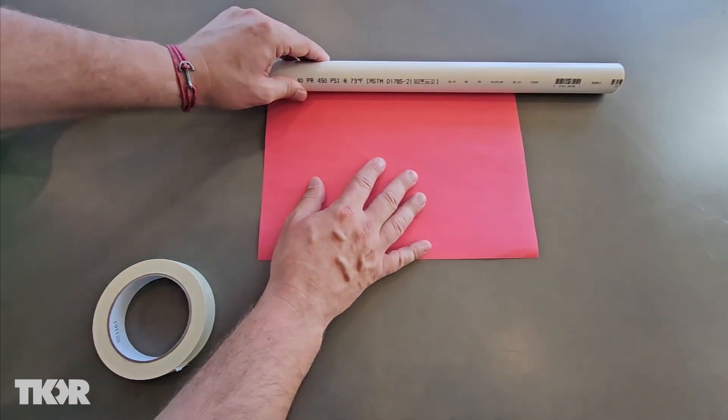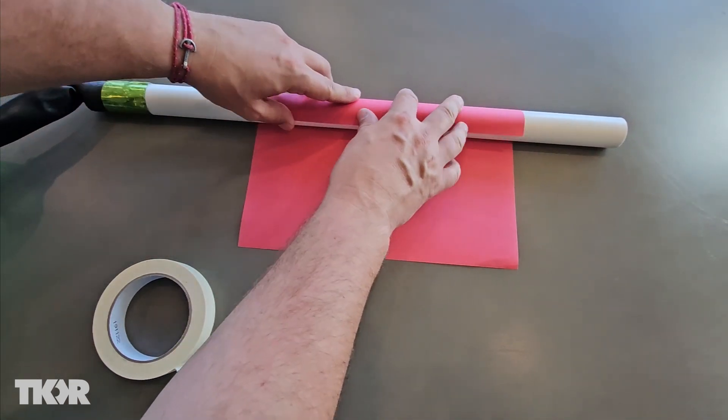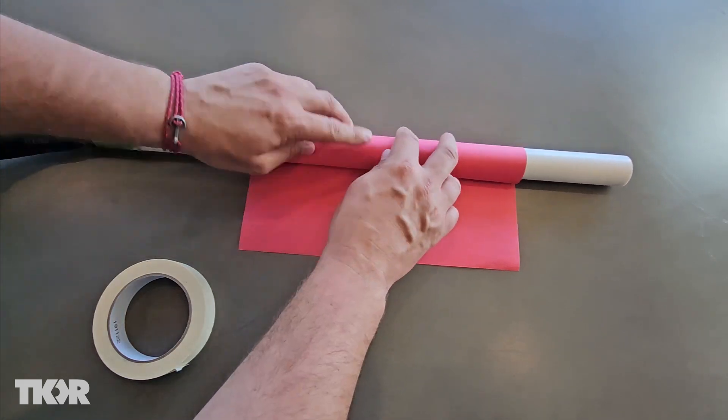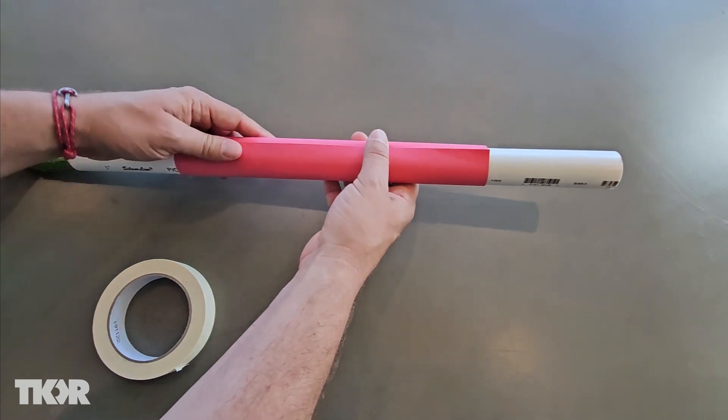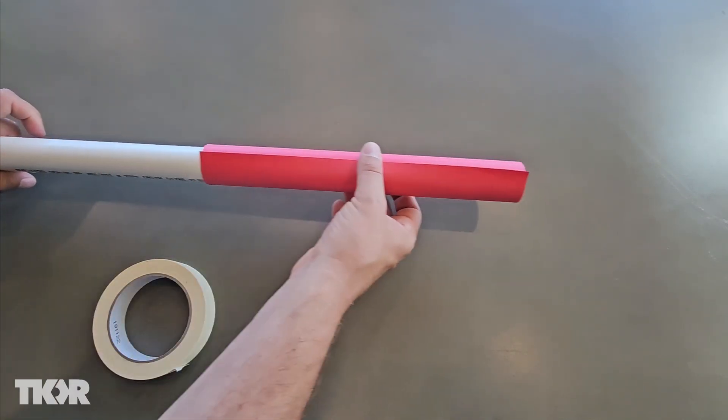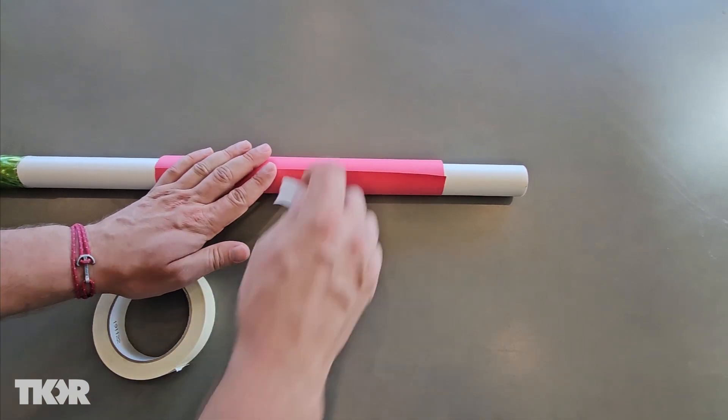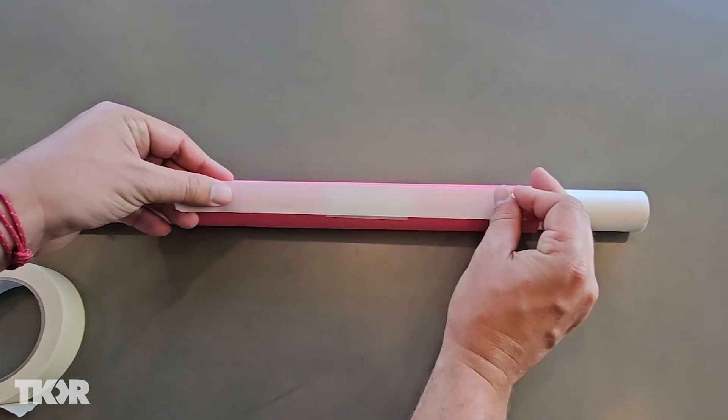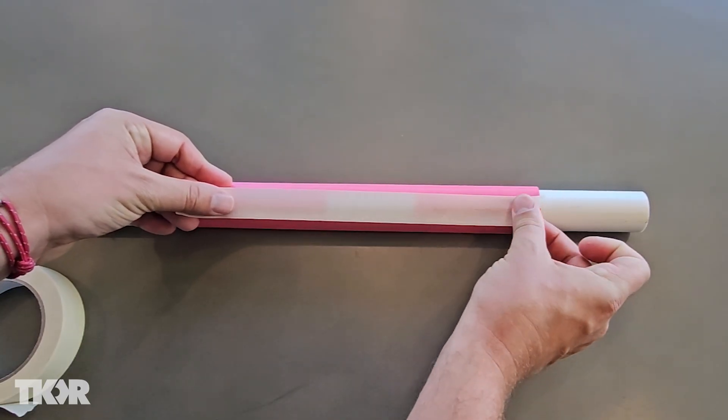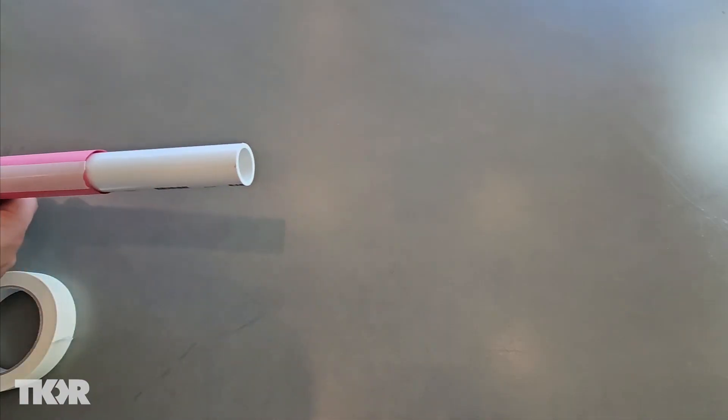To build your rocket, line your paper up lengthwise alongside your PVC pipe. Roll the pipe so the paper wraps around it, not too tight since it needs to slide on and off. Put masking tape on the seam to hold it in place. Make sure you tape the entire seam so no air can escape, and don't tape your paper to your PVC pipe.